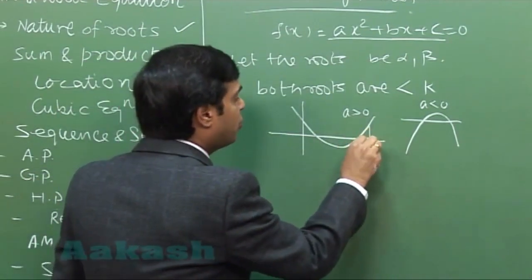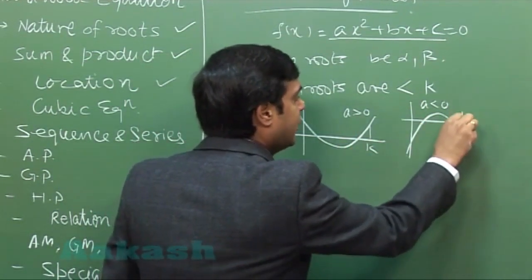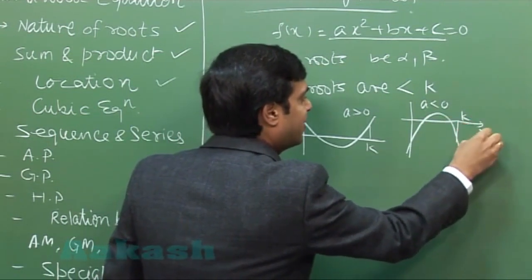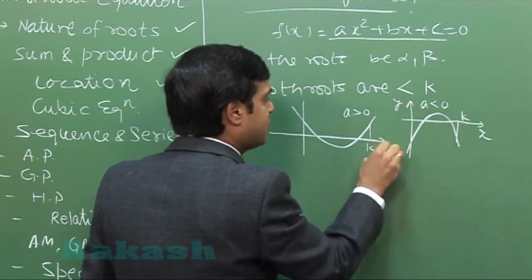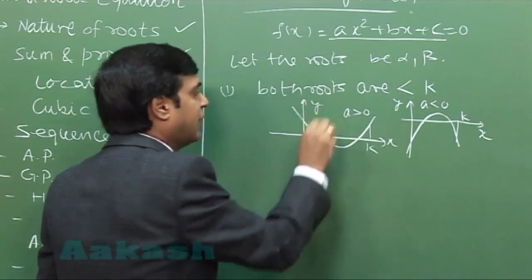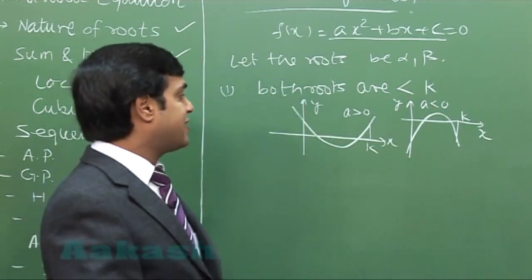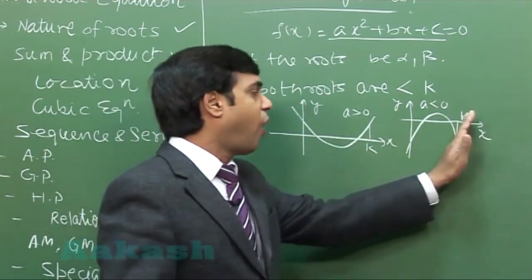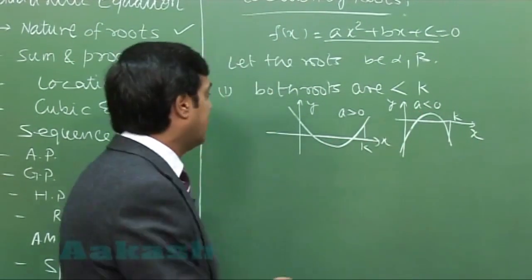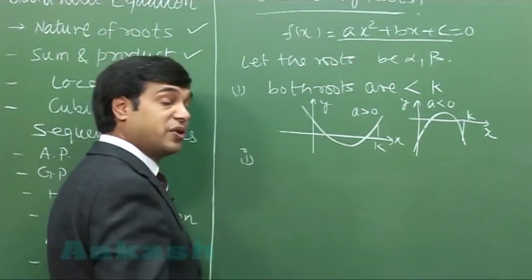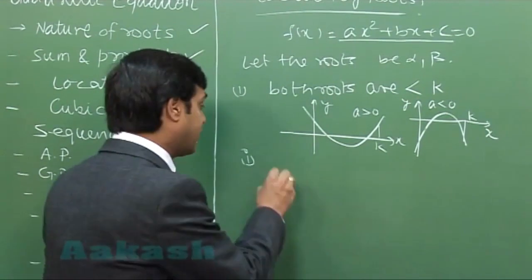Suppose both roots are less than k. Here is a number k on the x-axis and y-axis. Both roots are less than k, either this way or that way. The first thing we notice about this kind of question is the discriminant.